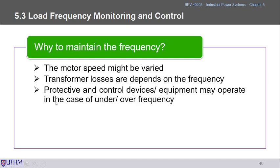Protective devices such as relays have time settings. At 50 Hz, one cycle equals 0.02 seconds. If frequency shifts to 50.5 Hz, even that 0.5 Hz deviation significantly affects how fast the protective device reacts to a fault — the time setting is impacted.